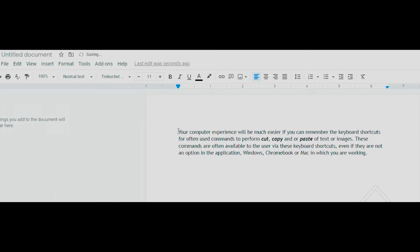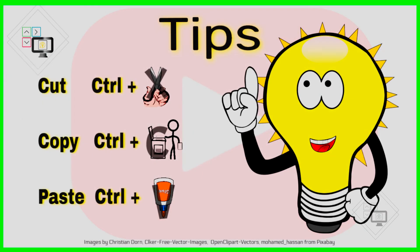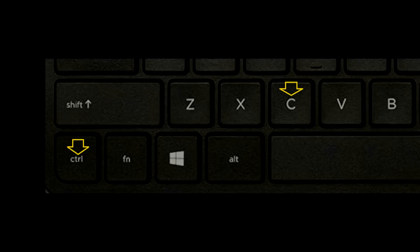The next keyboard shortcut I'm going to show you is Control+C. This function copies the selected content such as text or images, and it also works with files.